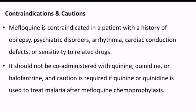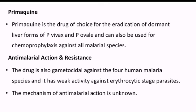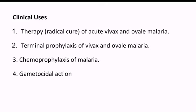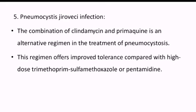Primaquine is the drug of choice for eradication of dormant liver forms of vivax and ovale malaria, and can also be used for chemoprophylaxis against all malaria species. The drug is also gametocidal against the four human malaria species and has weak activity against erythrocytic stage parasites; the mechanism of action is unknown. Clinical uses include: radical cure of acute vivax and ovale malaria, terminal prophylaxis of ovale and vivax, chemoprophylaxis, and gametocidal action. It can also be used for Pneumocystis jirovecii infection.